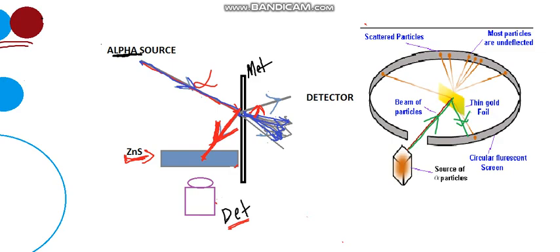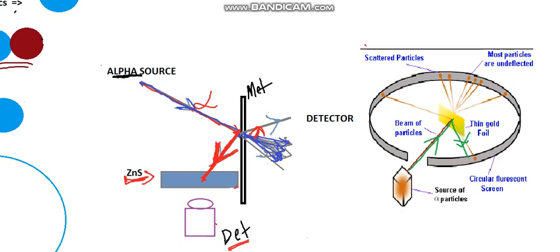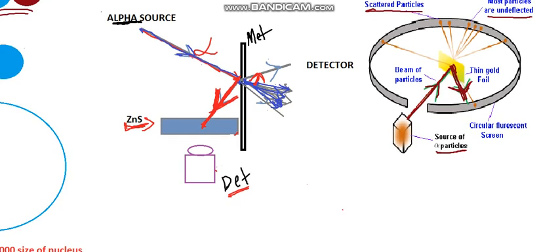There is another diagram which shows a somewhat advanced setup for this gold metal alpha scattering experiment. We have an alpha particle source, and these alpha particles are bombarded onto the gold foil. Most of the particles are undeflected, some particles are scattered with some angle, and very few are deflected back. Gold is one of the best materials because you can make it into a very thin layer.